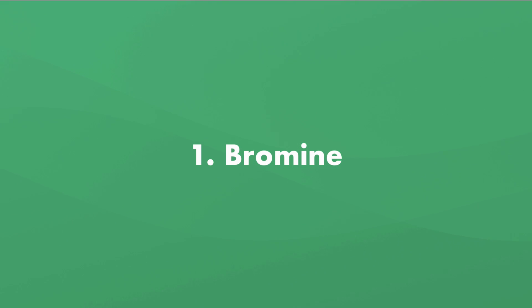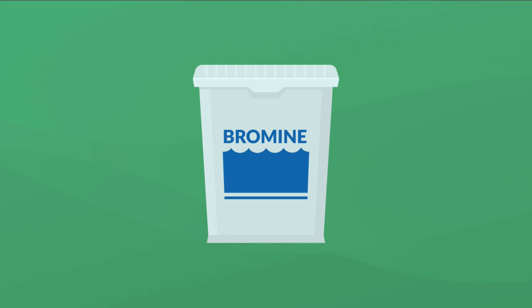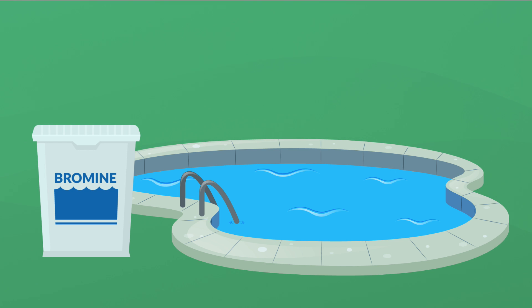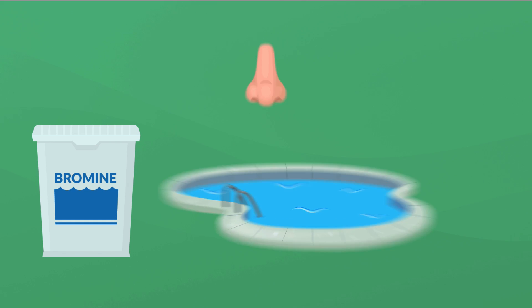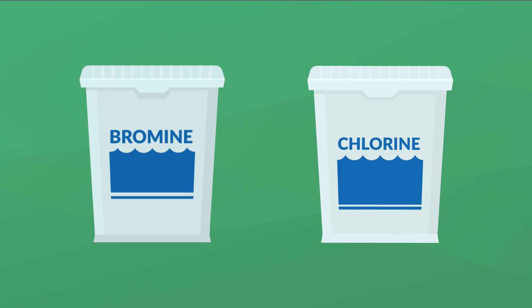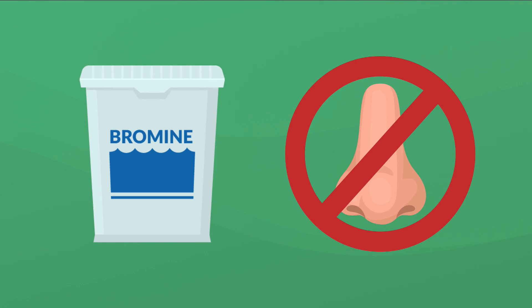One, you can use bromine. Now bromine is common in indoor pools, and the reason it's common is because it doesn't give off that chlorine smell, even though bromine and chlorine are part of the same halogen family. They're cousins. Bromine works very similar to chlorine, but it just doesn't have that chlorine smell.